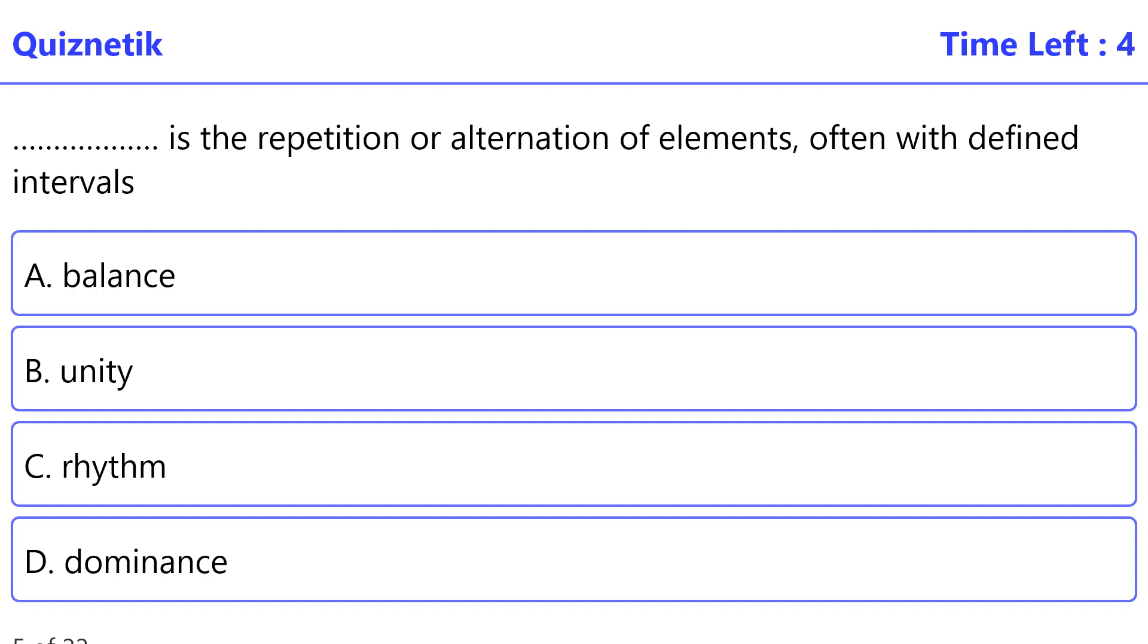Rhythm is the repetition or alternation of elements, often with defined intervals between them. The correct option is C, rhythm.